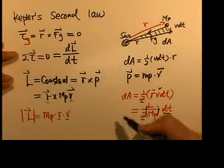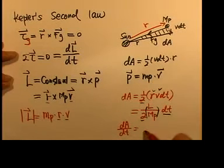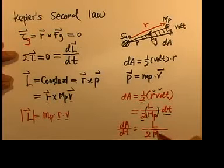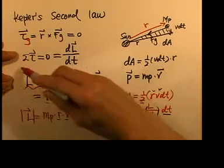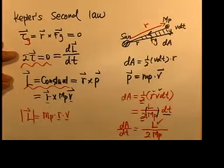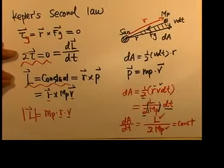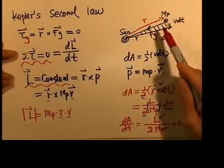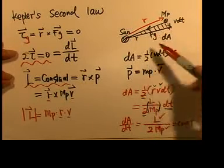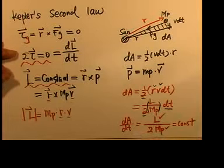If we differentiate the area with respect to dt, the dt cancels and we have dA/dt equals L over (2mp). Since we've shown that angular momentum is constant — because the total torque on the planet equals zero — and mass of planet is constant, then dA/dt is constant. This proves Kepler's second law: the radius vector sweeps out equal areas in equal time intervals, meaning dA/dt is constant.